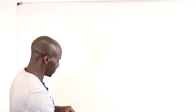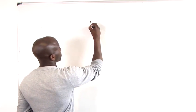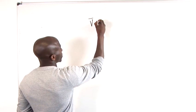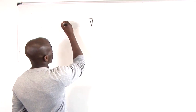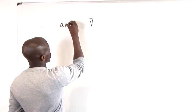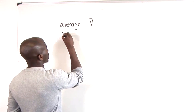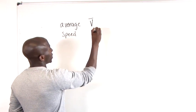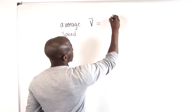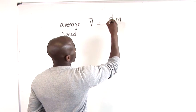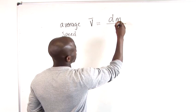So the first thing we want to do is look at the average speed in more detail. The average speed relates to V bar which denotes average speed, and it is pretty much the change in distance.